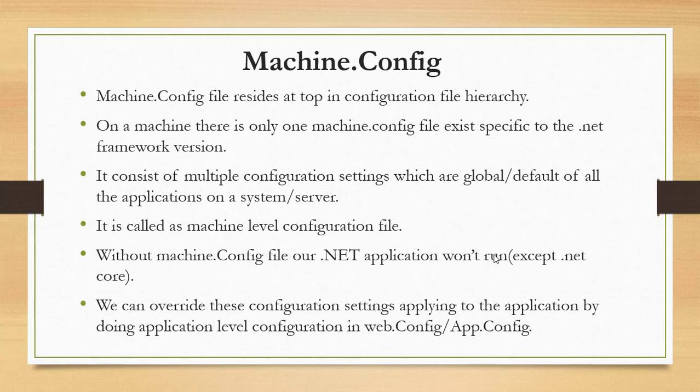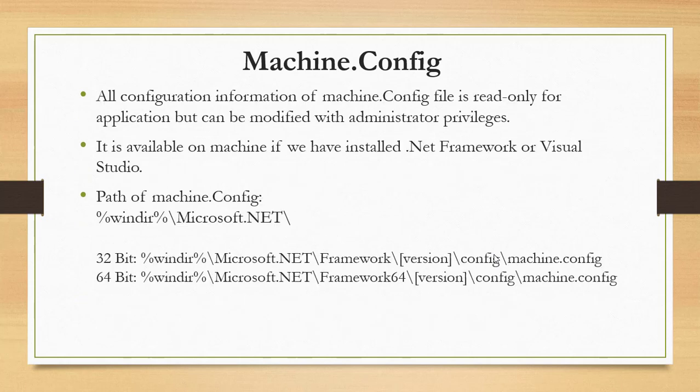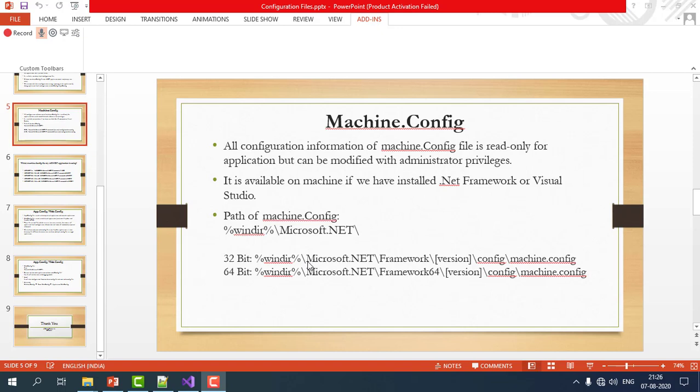All configuration information in machine.config is readable by applications but cannot be modified by them directly — you need proper administration privileges to modify it. machine.config will be available on your machine when you install the .NET Framework or any version of Visual Studio.